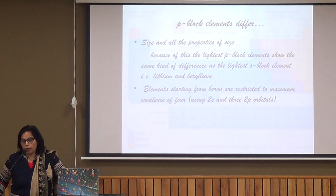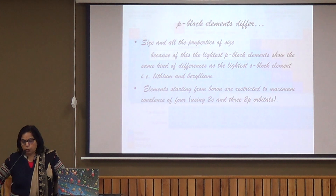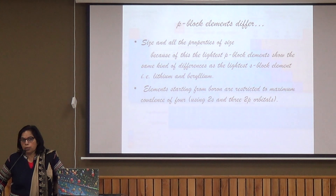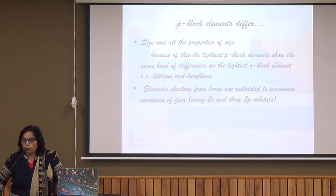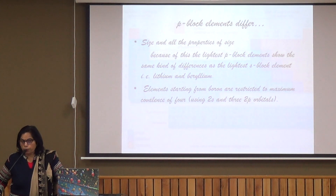Elements with intermediate properties behave as metalloids. They show the highest oxidation state due to their small size, and they can use d-orbitals for sharing. For example, in the case of aluminium, the 3d orbital is also present, so aluminium can show 3S2 3P1 configuration and can show a maximum of 6 coordination because of the presence of vacant d-orbitals.